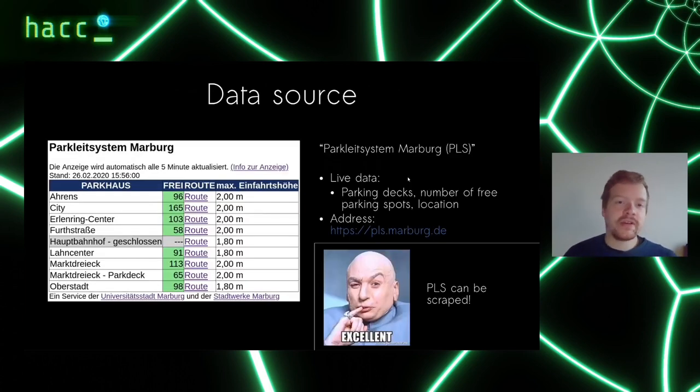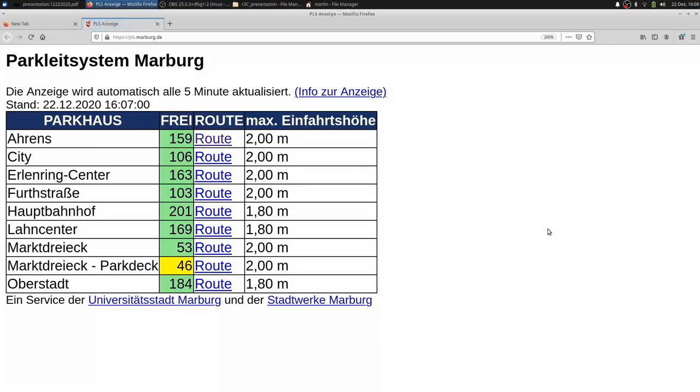First of all, a quick introduction to the data source. The parking data from Marburg is published live on a system implemented by the city council called Park Light System Marburg, or PLS. It publishes data such as parking decks, number of free parking spots, and location. The address is pls.marburg.de. It's still online and you can see here the parking deck names listed, the number of free parking spots color coded.